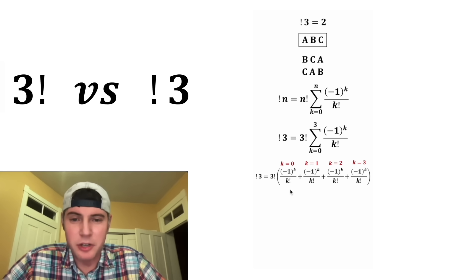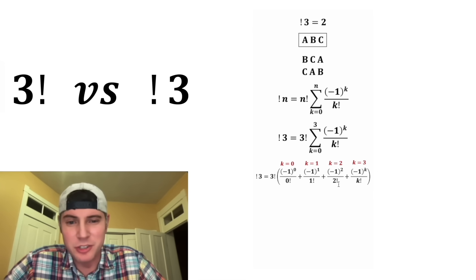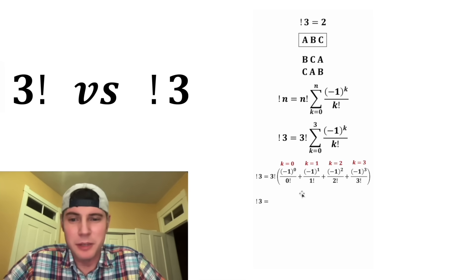So for k equals 0, we're going to change both of these k's into 0. For k equals 1, we'll change both of these to 1. For k equals 2, these will change into 2. And for k equals 3, these will change into 3. And now let's clean things up a little bit.